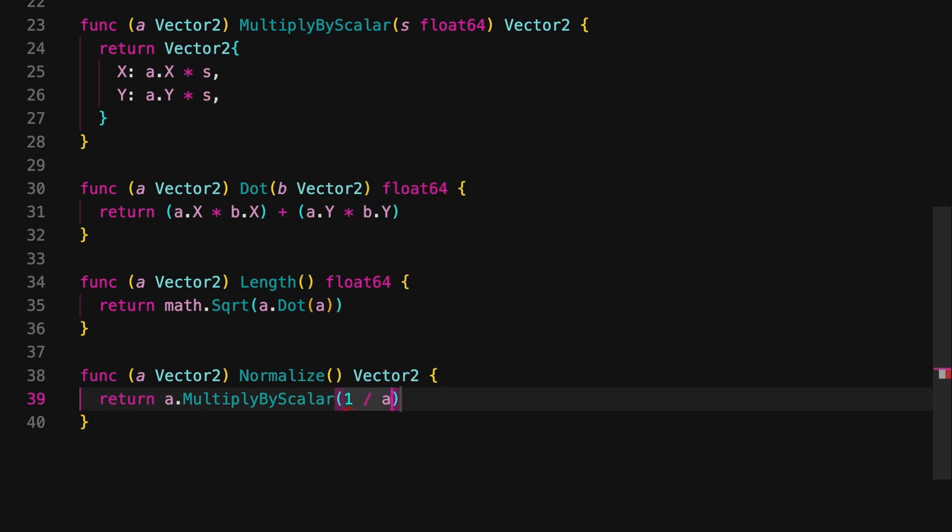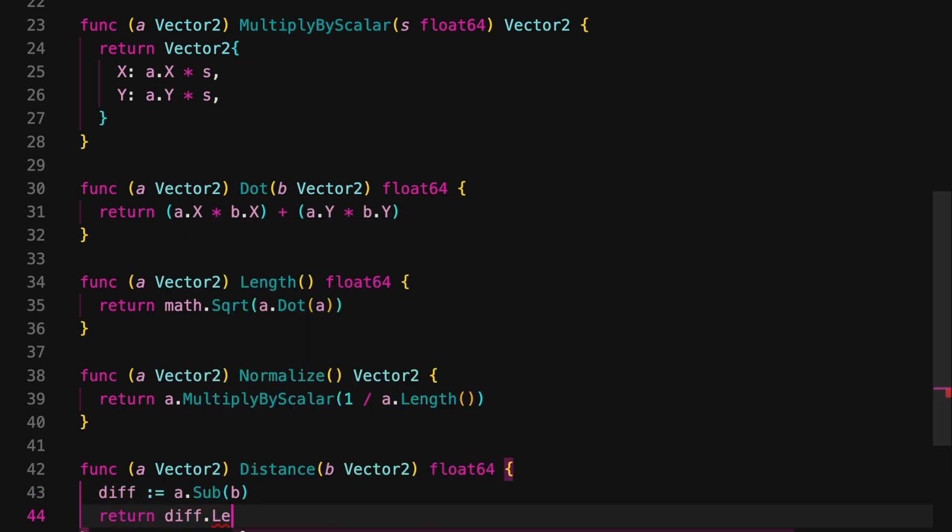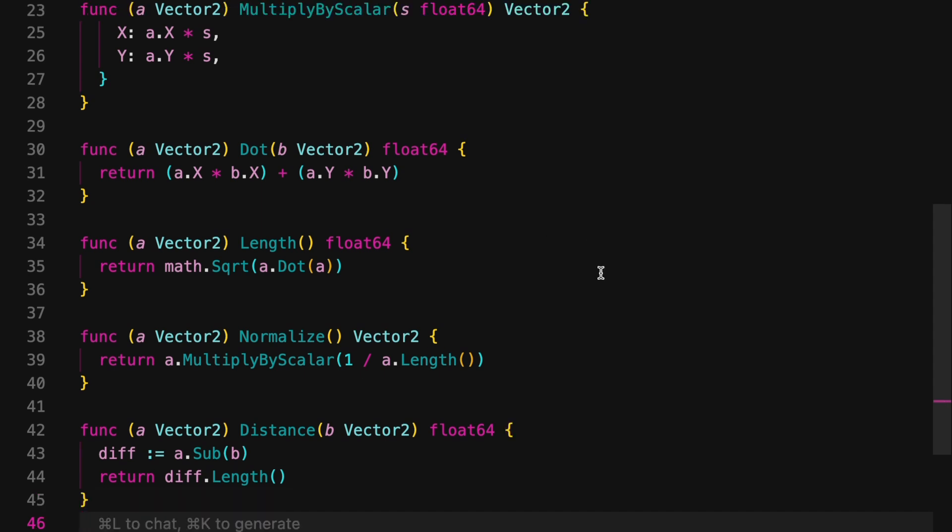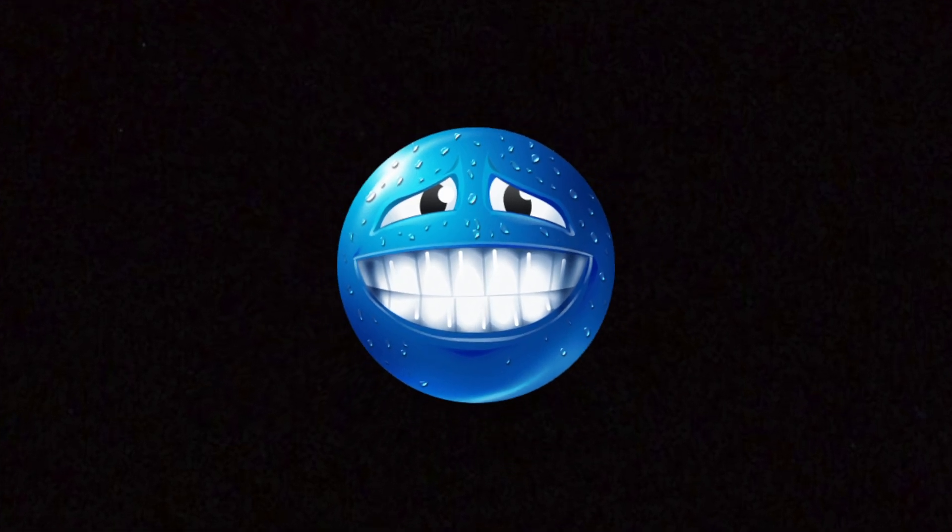The dot product is huge in physics engines, since it helps us calculate the relationship between two vectors. For example, if a ball is moving and it hits a surface, use the dot product to figure out how much of its velocity is directed along the surface's normal vector. This is critical for simulating bounces or collisions. And boom, we're all done with all the boring vector stuff. Now we can actually dive into making the engine itself. Wait, never mind, we have to make rigid bodies.